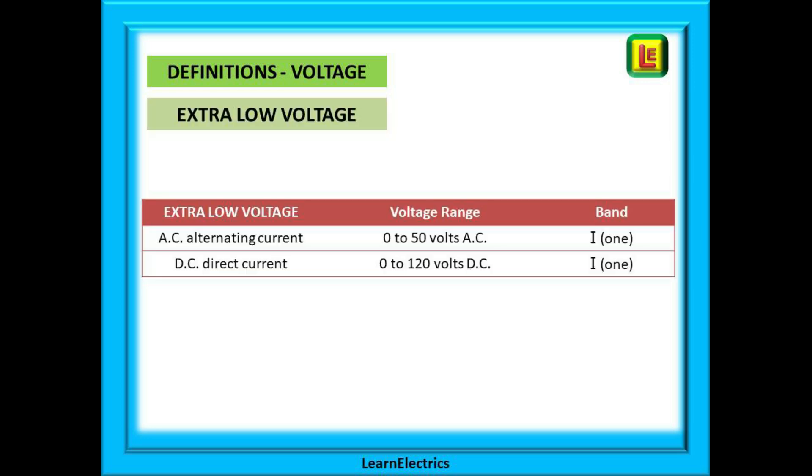Then we have three different voltage bands. The first is extra low voltage which starts at zero volts. This is called band one voltage. If it is an AC voltage the maximum for this band is 50 volts. If it is DC then it is 120 volts. And the limits have been set at the limit of survivability. An electric shock at 50 volts AC is unlikely to be fatal for a normal healthy adult.